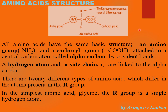Amino acids differ by the R group, which is the side chain. In addition to the differences in the R group, proteins also differ by the number of amino acids that make them, and by the sequence of the different amino acids and how they fold to form different structures, as we shall discuss in our next lesson.